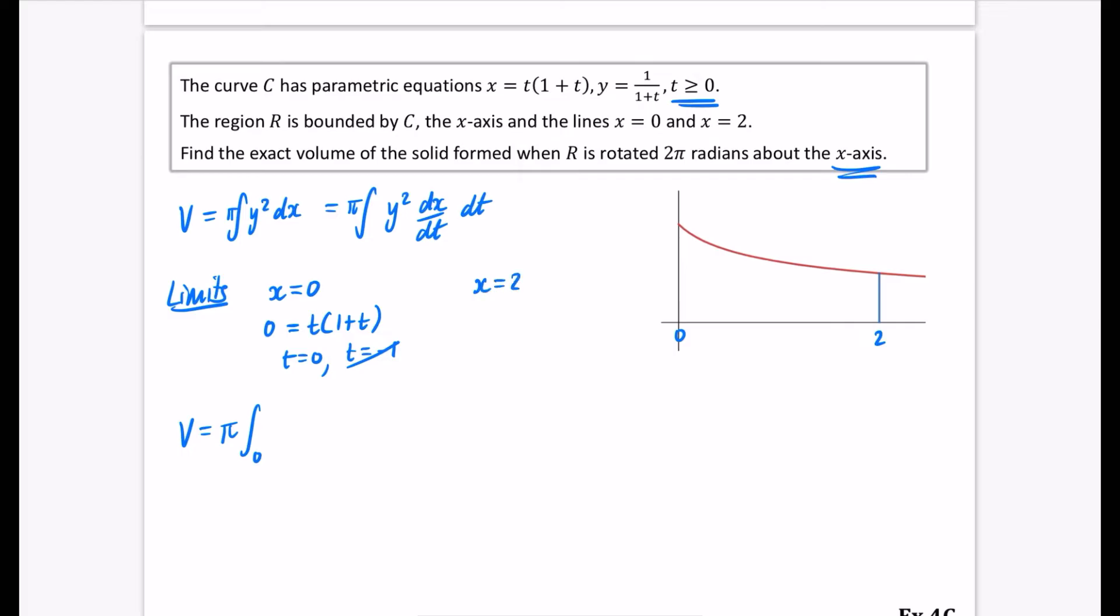And when x is equal to 2 I'm going to find out what t is equal to. So that means 2 equals t(1+t). I'm going to just do this as a quadratic. So we get 2 equals t plus t squared. In other words we have t squared plus t minus 2. So that's (t-2) and (t+1). So t is 2 or t is minus 1.